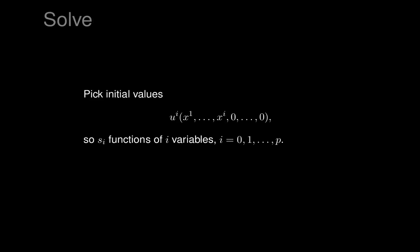Let's pick some initial values. Each u_i is picked to be an arbitrary function of x_1 through x_i, with the additional x's set to zero — we assume we're working around the origin in our coordinates. So this is s_i functions of i variables, which is exactly what the Cartan-Kähler theorem predicts. What we want to show is that picking the initial values of u_i depending only on x_1 through x_i will give rise to an integral manifold with those initial values.